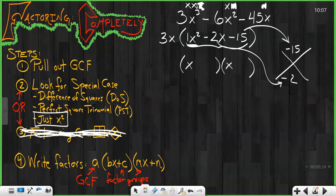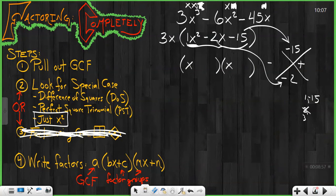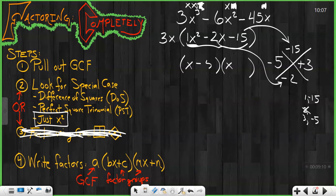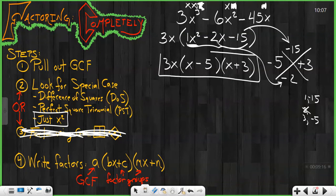What multiplies to get negative 15? That's going to be a negative and a positive — therefore, they have a difference of 2, where the negative number is greater because I have negative 2 left over. So I've got 1 and 15 — those don't have a difference of 2. 2 doesn't go into 15. I've got 3 and negative 5 — there it is! 3 and negative 5 have a difference of negative 2. Therefore, those are my groups, and I need to put my GCF out front, giving me my final answer: 3x times (x minus 5) times (x plus 3).